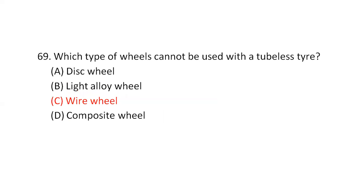Which type of wheels cannot be used with a tubeless tire? Option C or D — wire wheel.